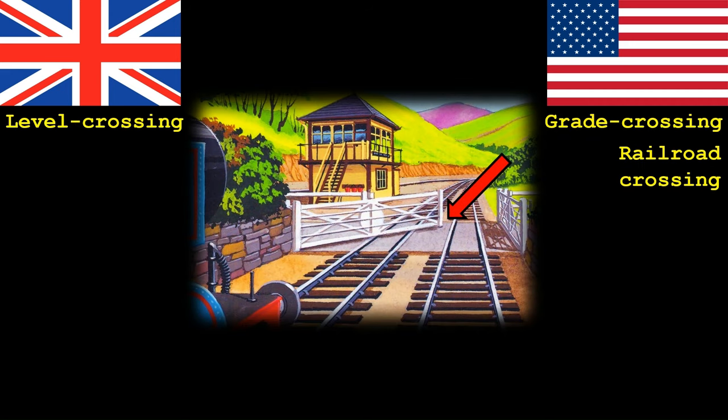One thing you have to be wary of when operating a railway is when other methods of transportation need to cross the railway. This can be done using tunnels or bridges, but perhaps more commonly is done using a crossing. In the UK you would call this a level crossing, as it is usually done on level ground. In America the official name for this is a grade crossing, however almost everybody refers to it as a railroad crossing.